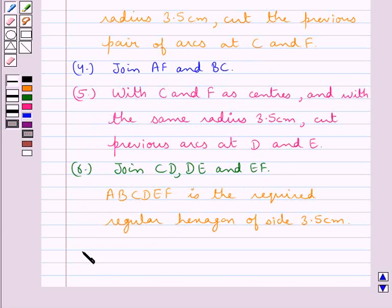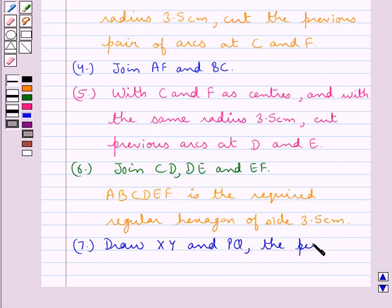Now next we need to circumscribe the circle on it. So for this we would draw XY and PQ, the perpendicular bisectors of AB and BC.